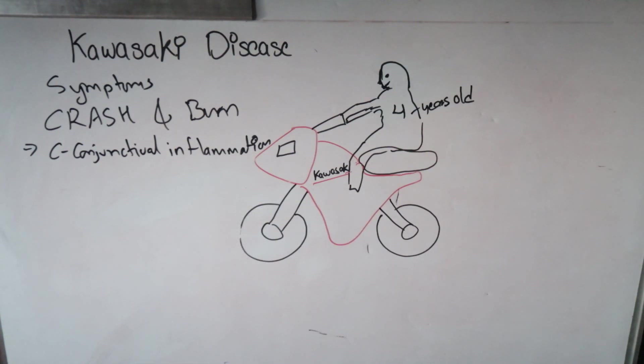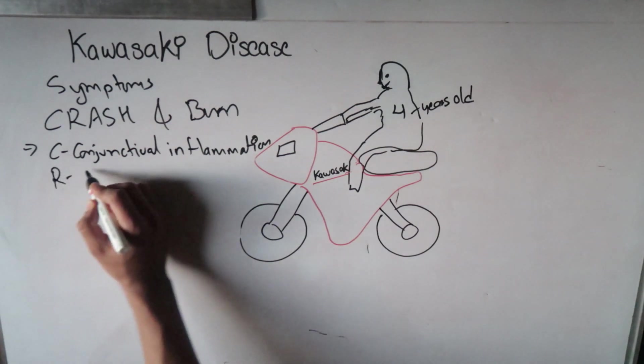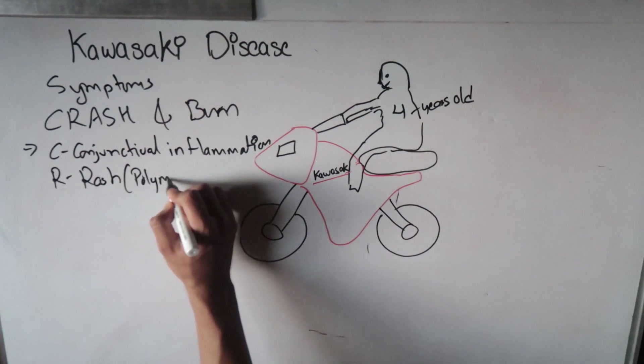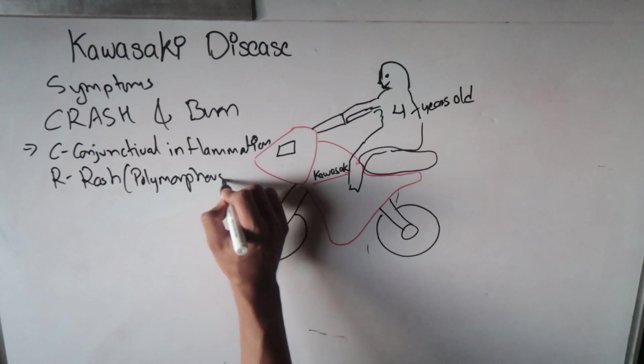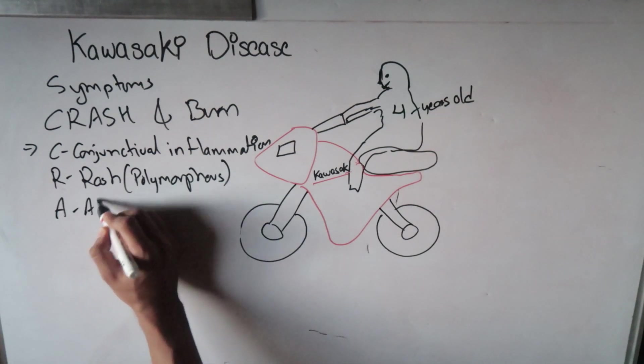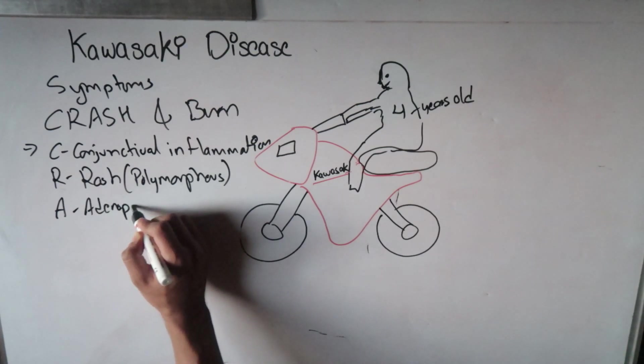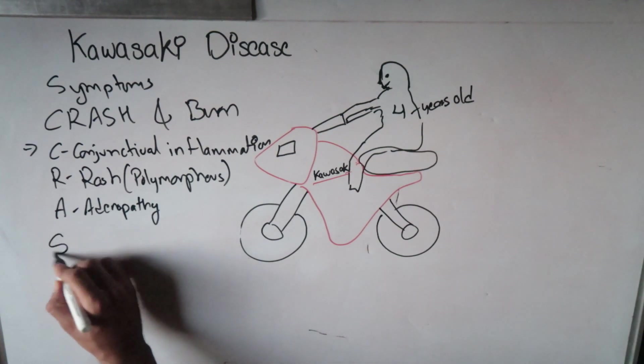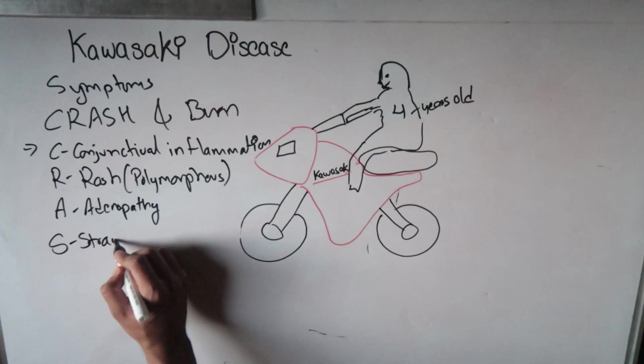The second, R, means rash. There will be polymorphous rash which will later desquamate. A means adenopathy.